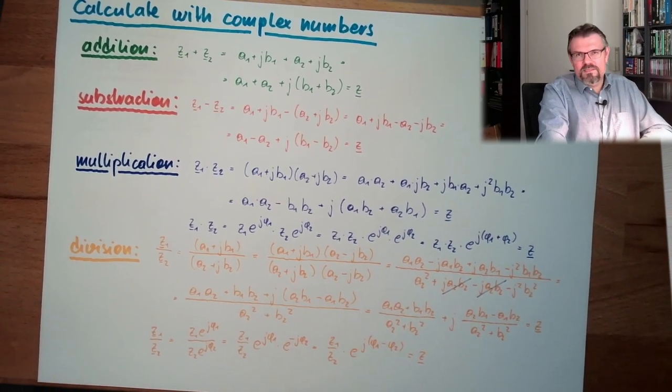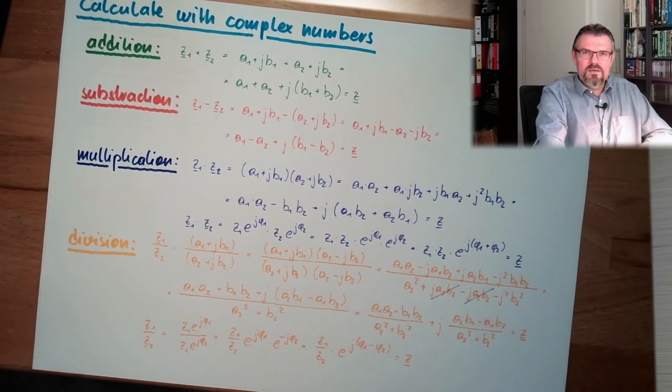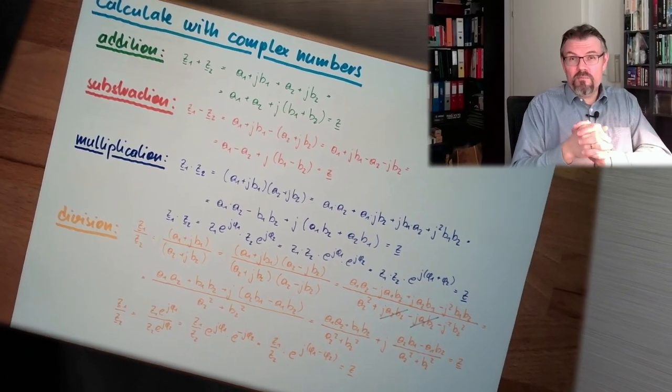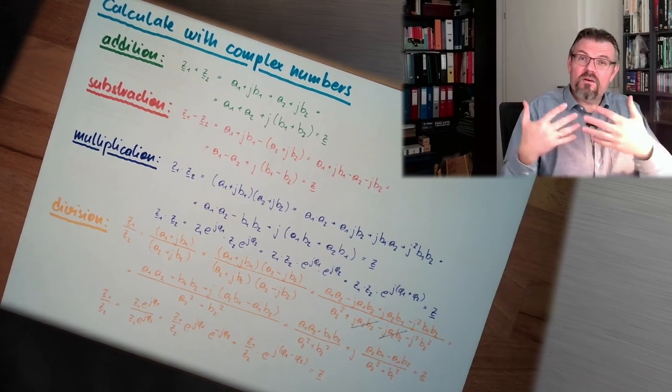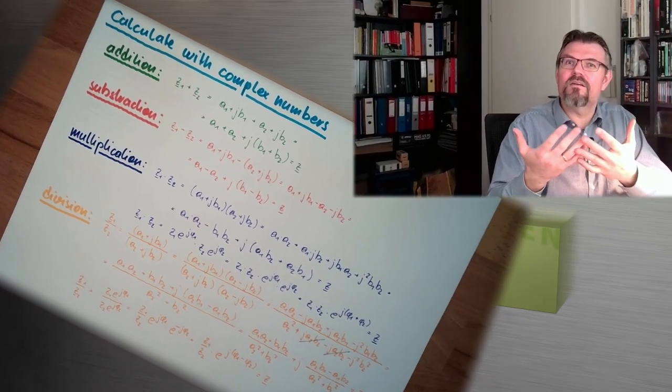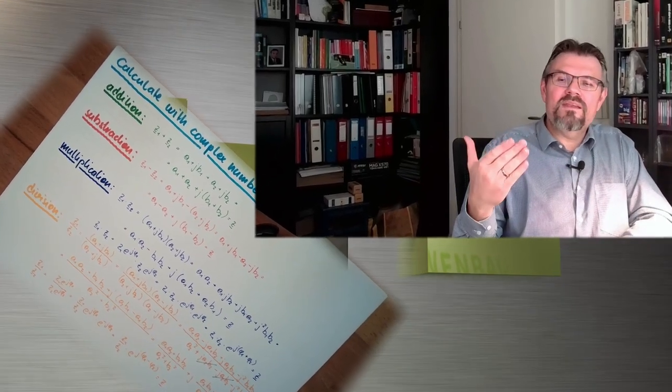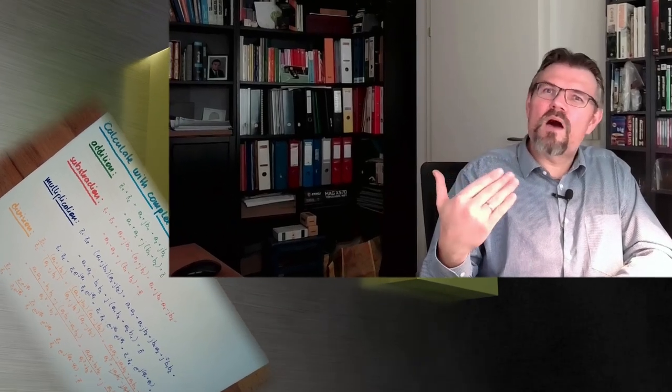We've talked about complex numbers over two videos, and we're discussing alternating current. There must be a connection—and it's coming in the next video, where I'll show you how sinusoidal quantities can be represented as complex numbers and how that mapping works. Thank you very much for listening. Goodbye.